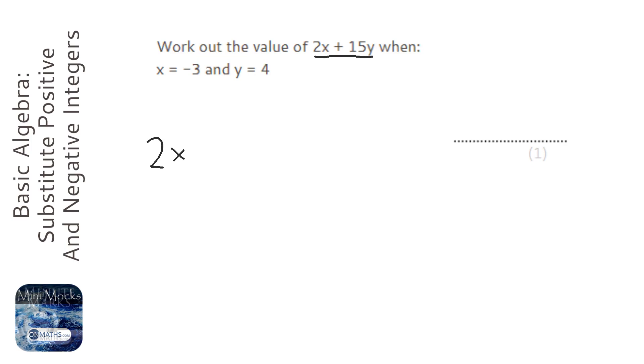So I'm going to do 2 times, and I normally put negatives in brackets. So x is minus 3, so 2 times minus 3. And we're going to add 15 times what y is, well it says y is 4.